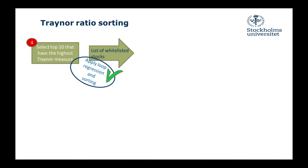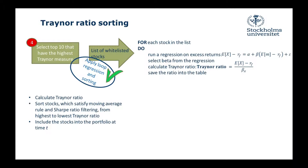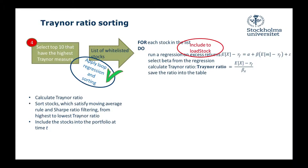Let's start. We're going to take a look at the fourth logical block where we need to select the top 10 stocks which have the highest Treynor measure. But before this we need to calculate this Treynor measure, sort the stocks, and apply that for each period of time. From our basics videos, here is the logical block: for each stock in the list we need to run a regression, select beta, calculate the Treynor measure, and save the ratio into the table. We're including this in the load stock function.